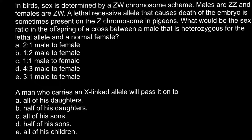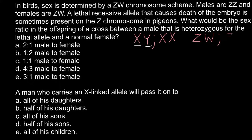In humans we have a sex determination system that is XY, so males are XY and females are XX. The male defines which sex the offspring will be because he can give either an X chromosome or a Y chromosome. In birds the system is different — the female defines whether the offspring would be male or female. Female birds are ZW and males are ZZ.